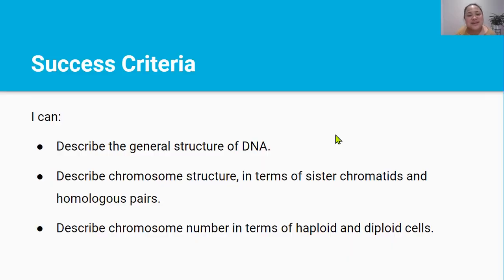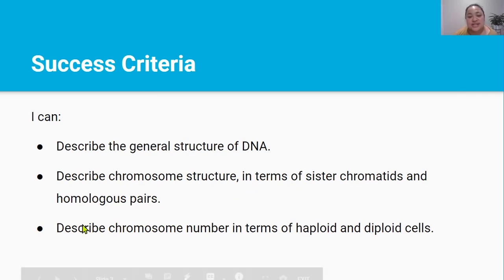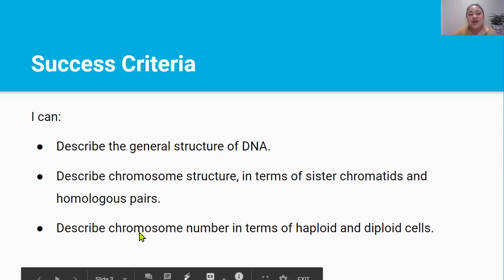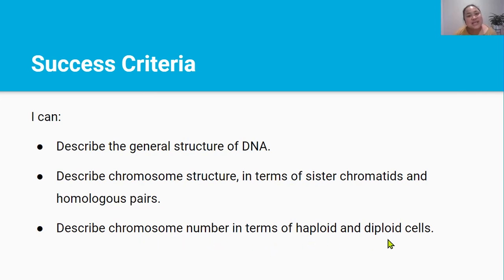Awesome, so you made it to the end of the video! By now you should be able to describe the general structure of DNA, describe chromosome structure in terms of sister chromatids and homologous pairs, and describe chromosome number in terms of haploid and diploid cells. Thanks for watching, and I'll see you in the next video.